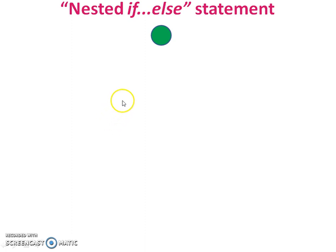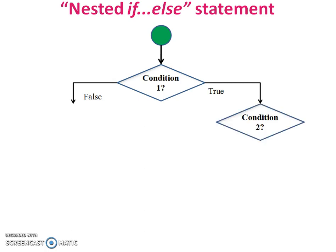Now the flowchart starts. First, condition one. There are two options: if condition is true or else part if it is false. If condition is true, then again second condition. Because this is nested if-else, it means if-else inside if-else. So this is condition two. There are again two parts: if it is true or false. Now check, if condition one is true and condition two is also true, then statement one will be executed.